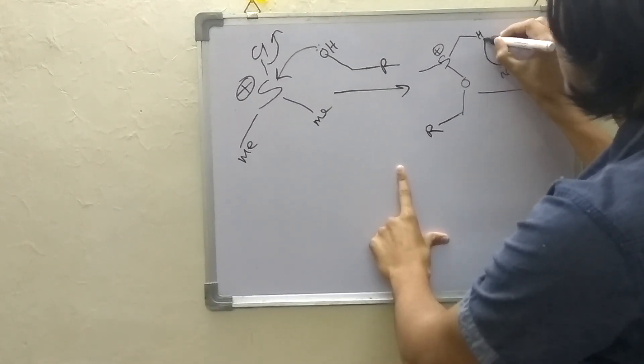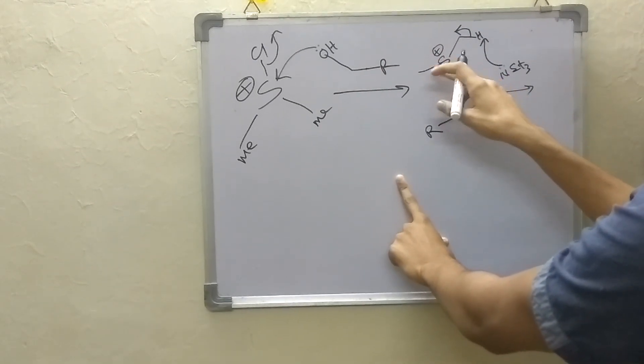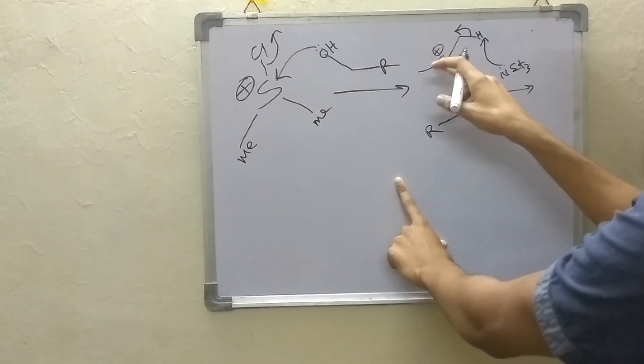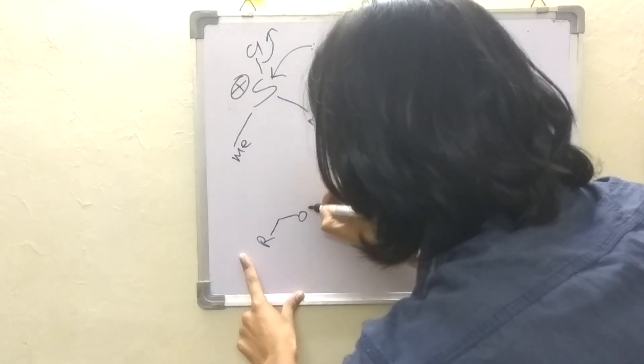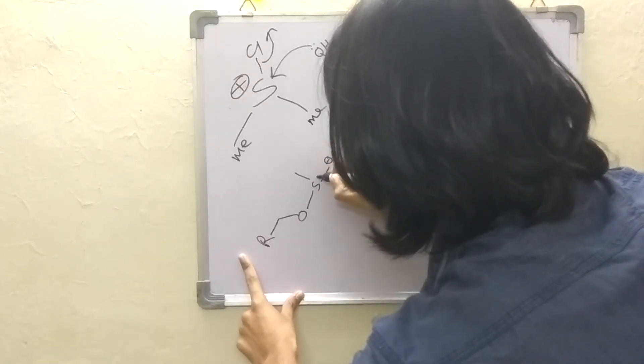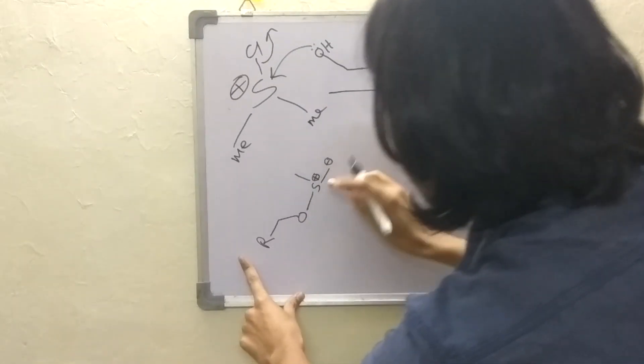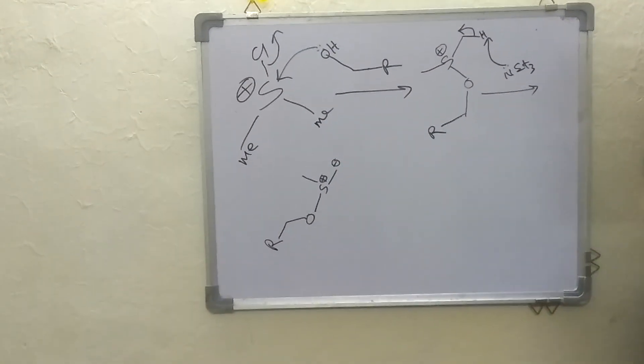This is base so it will abstract this hydrogen - this is acidic hydrogen because of this stabilization of this negative charge. A ylide will be generated here.